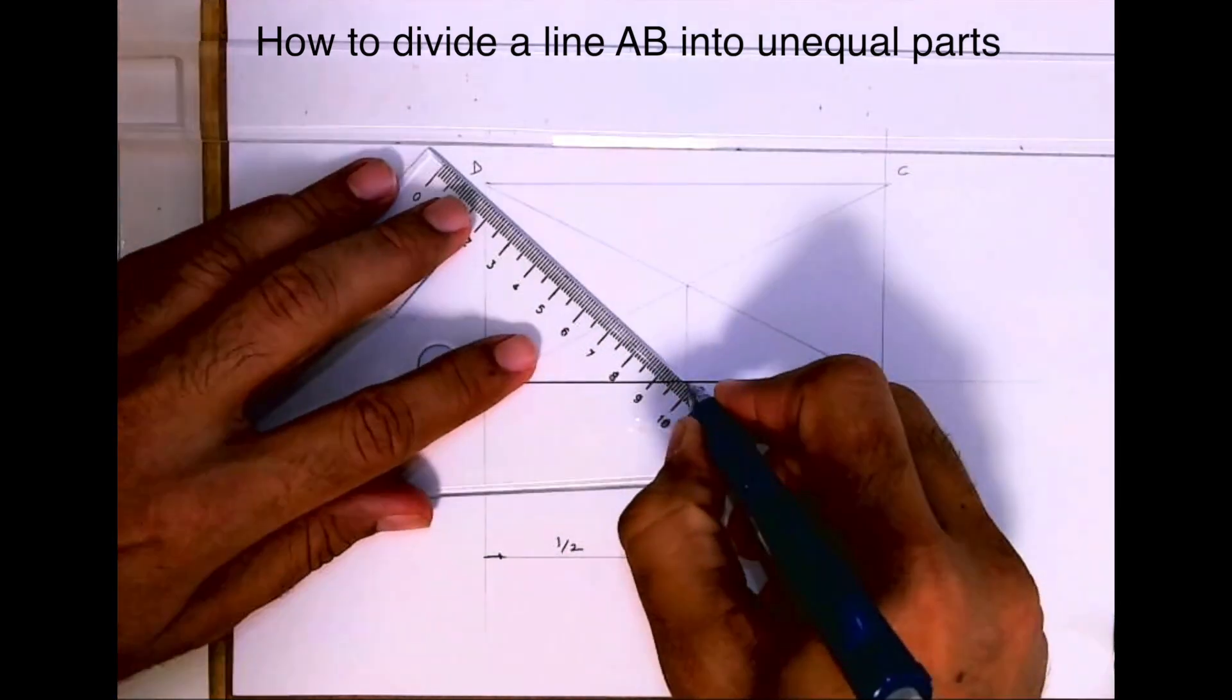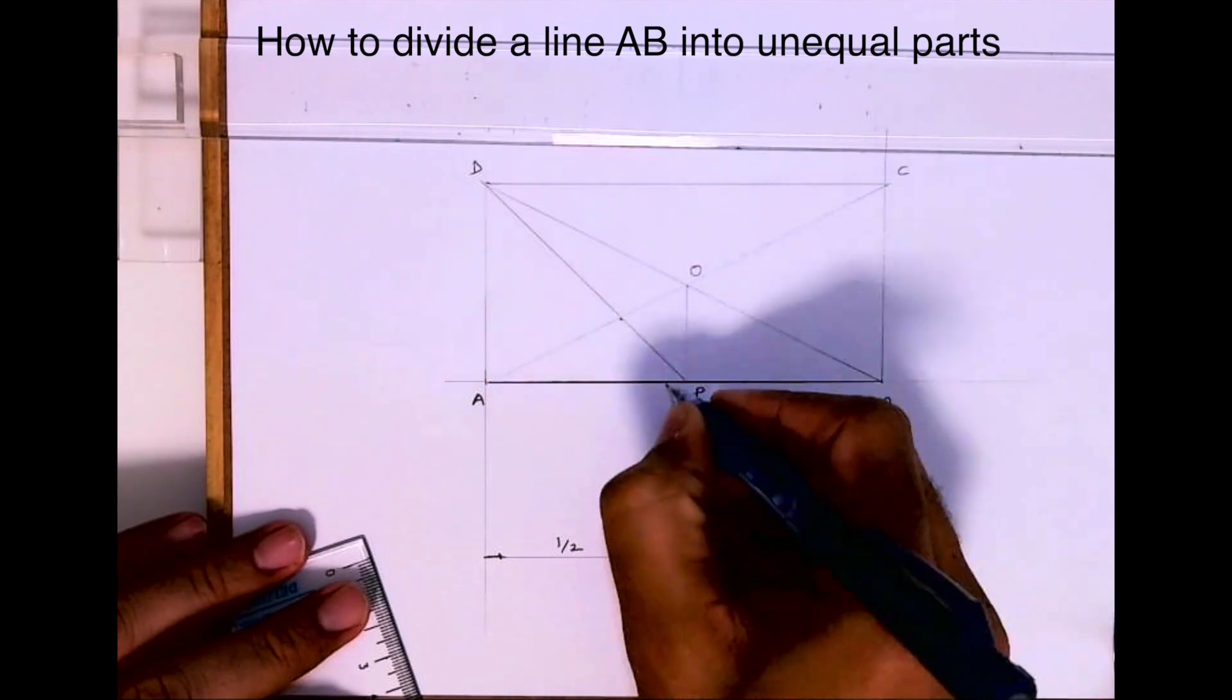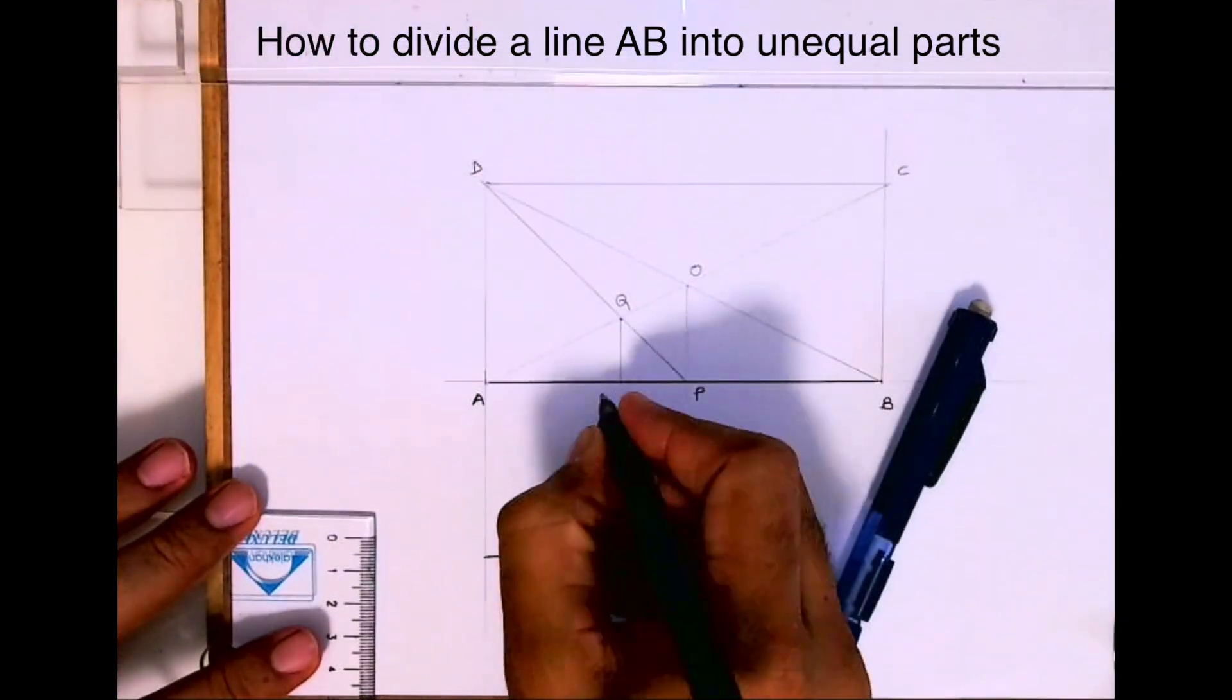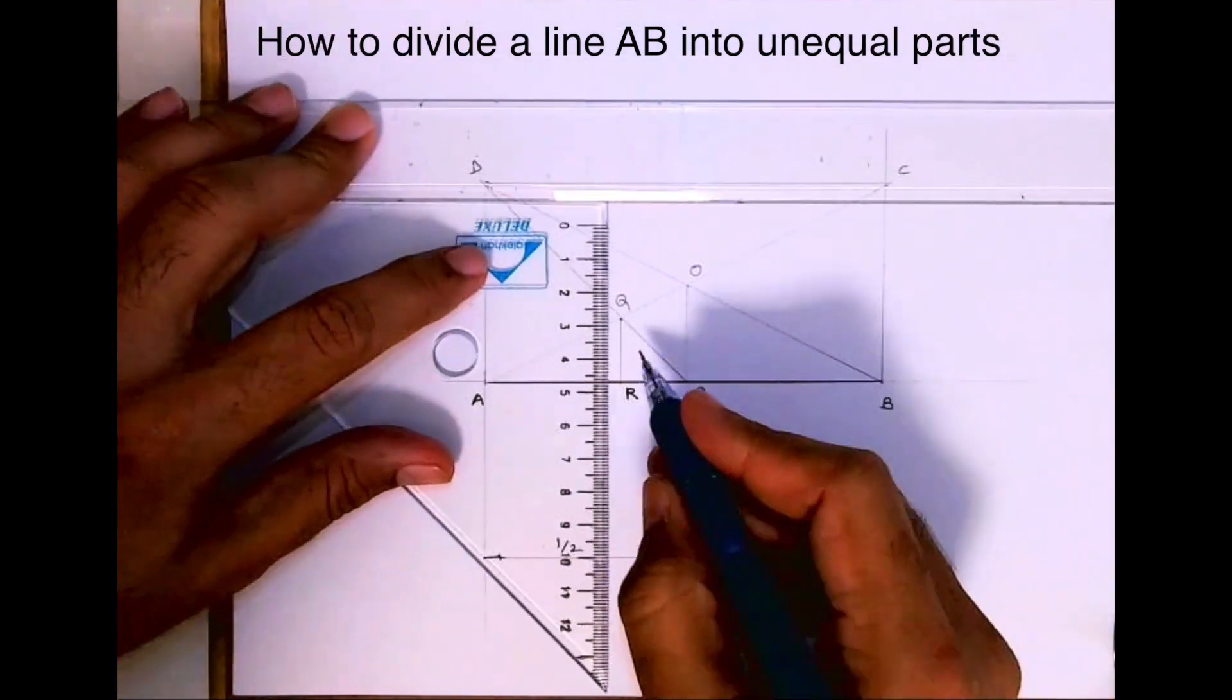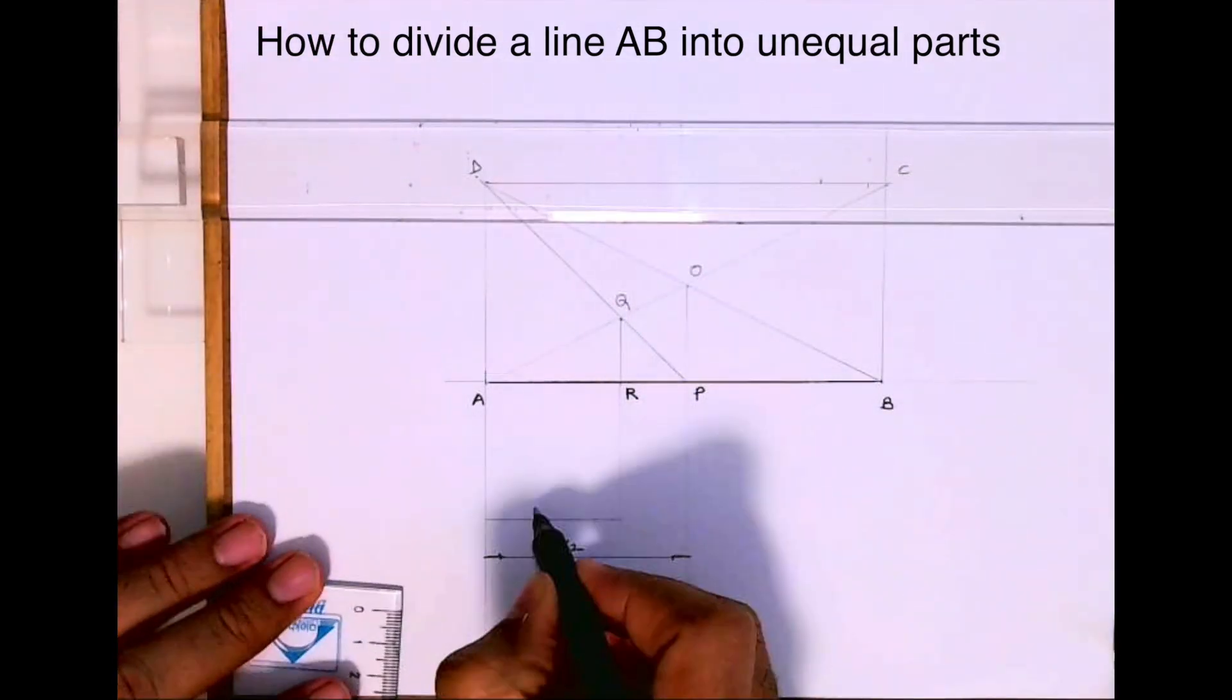Now what I'll do, I'll join D to P. I'll get this point. See, first this is O, this is Q. From Q I will draw a vertical line. That will be R. So AR is one third of AB.